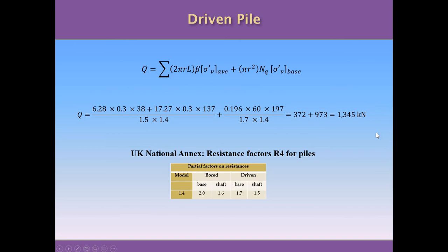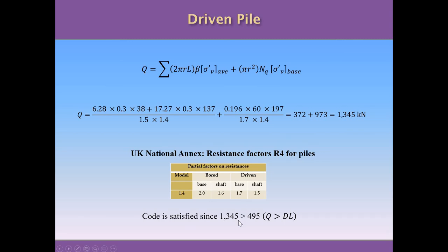Running the calculation, the total capacity of the pile is 1,345 kN. Comparing this against our design load of 495 kN, we see that the pile satisfies the code and can carry much more load than required. The safety factor — the ratio of pile capacity to design load — is greater than 1, confirming the pile is in good condition.